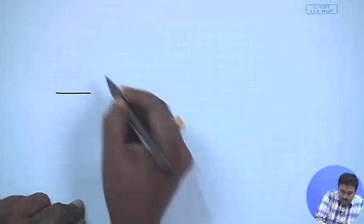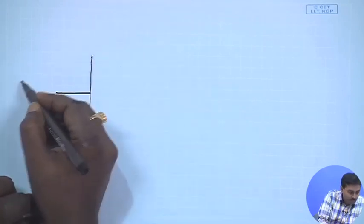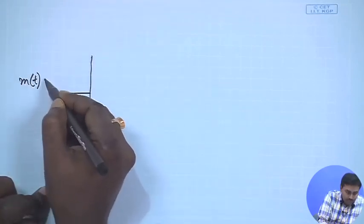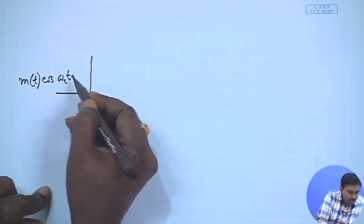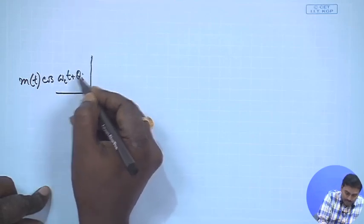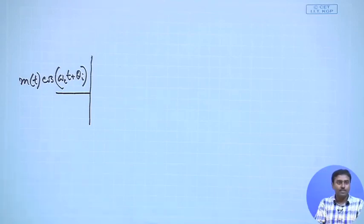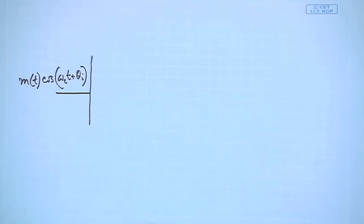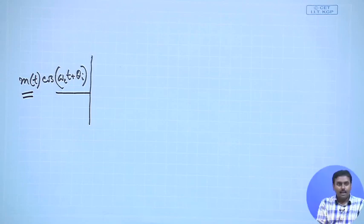Let us try to draw that circuit. The input is m(t)·cos(ωc·t + θi), where m(t) is the message signal and we have done a DSB-SC modulation - we have multiplied with cos(ωc·t) but there might be a phase θi included in it.